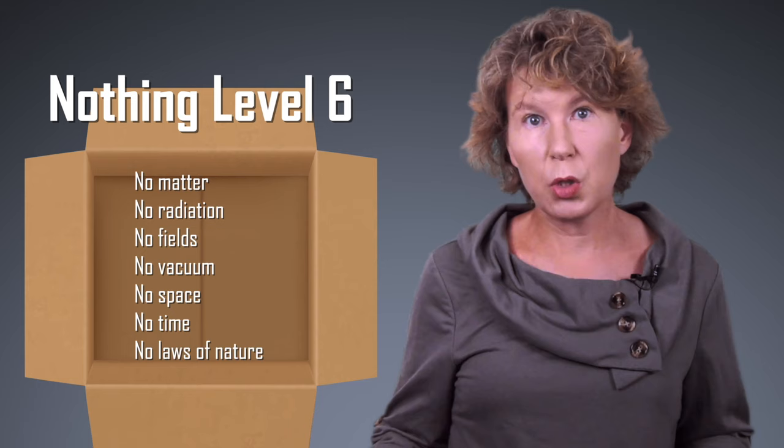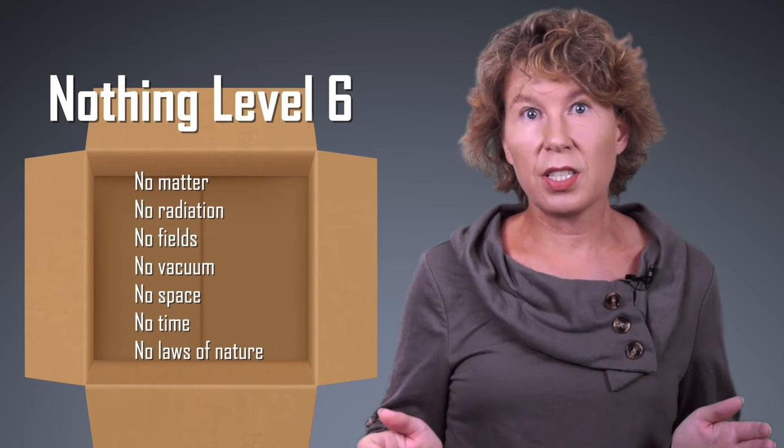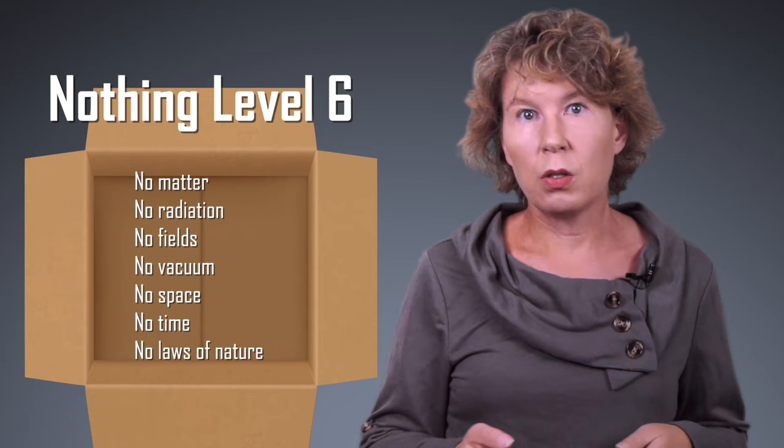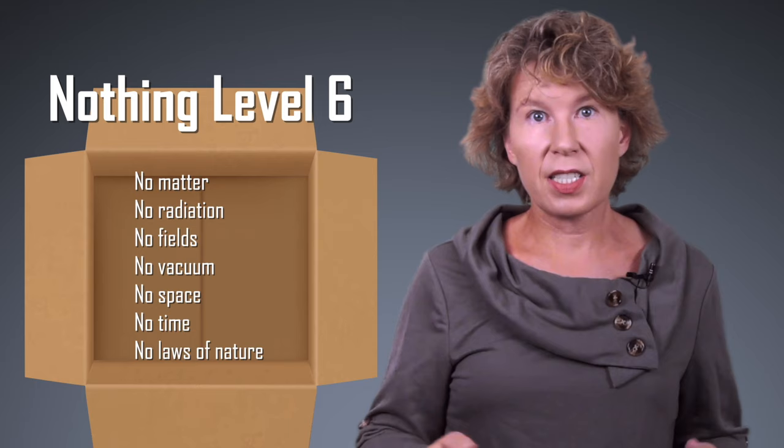This is why for level 6 of nothing things get decidedly weird. Because we remove space and time too. And just to make sure, we'll also remove all other equations and laws of nature that might give rise to space and time, such as strings, or quantum gravity, or whatever other idea you believe in. Remove all of it. At this point, there's nothing left from our theories of physics. So why is there any physics at all? This question is one of the reasons we'll never have a theory of everything, because even the best theory can't explain its own existence. Scientific explanations end at this level, and it's probably where this video should end, but I admit I enjoy talking about nothing, so let's see what else there is to say.